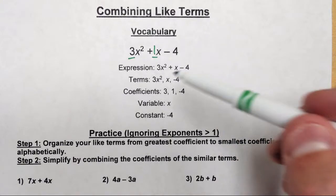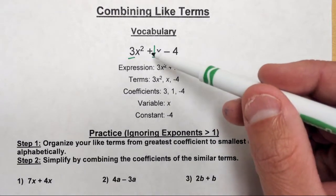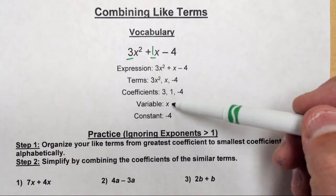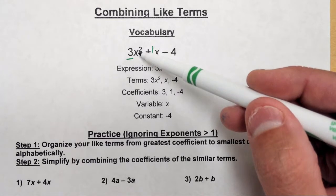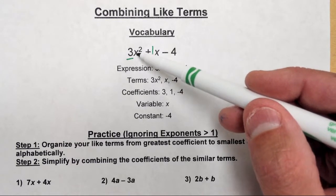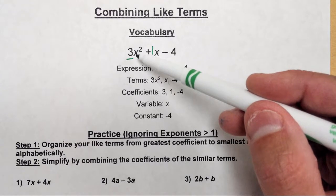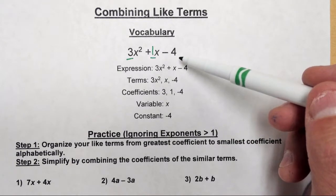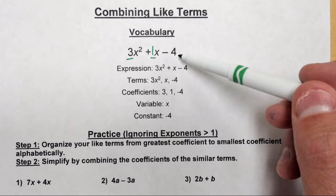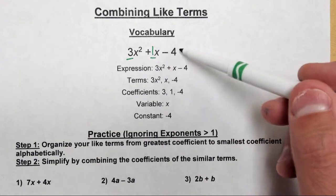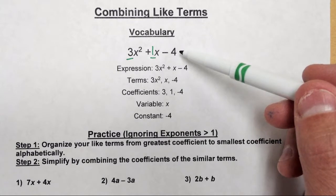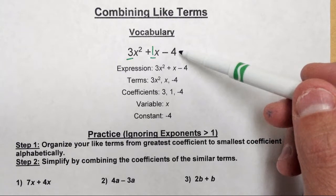Coefficients are the numbers in front of the variables. And then the variable here is x. What is a variable? It's just a symbol that represents any mathematical number. So I can put in a negative 2, a 5, or a 100 — it could be a decimal fraction, anything like that. And then a constant is the term that has no variable next to it. So if I were to plug in x equals 3, that's not going to change this term because there's no x associated with it. A constant is just a number that stays constant in the expression, no matter what the variable is.